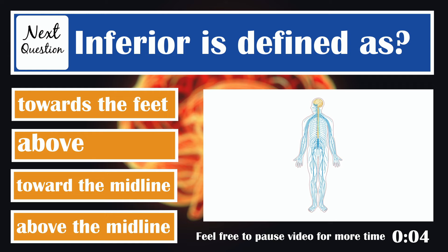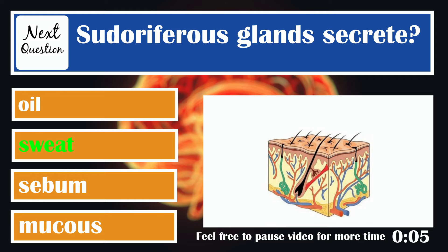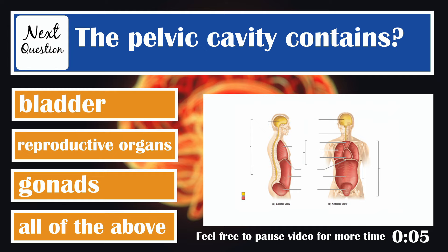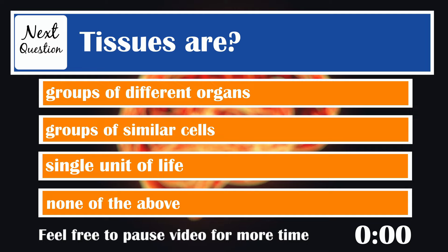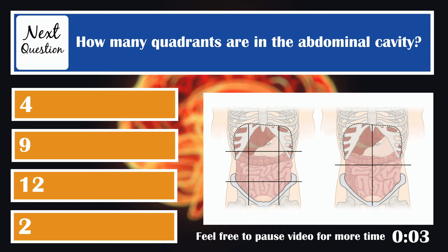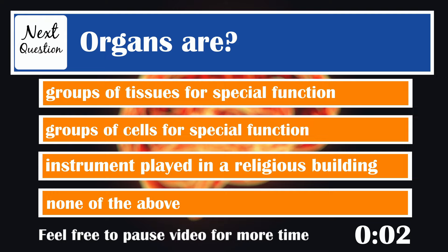Sudoriferous glands secrete sweat, also known as perspiration. The pelvic cavity contains the bladder, the reproductive organs, and the gonads — so it's all of the above. Tissues are groups of similar cells. How many quadrants are in the abdominal pelvic cavity? Four. Away from the midline is lateral. Organs are groups of tissues for special function.